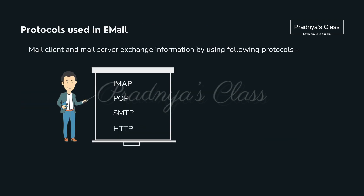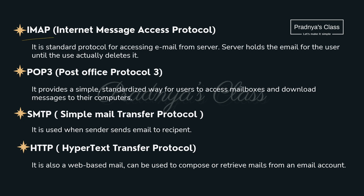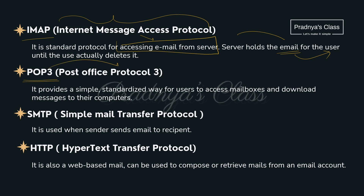Now let's discuss some protocols used while sending email. The first one is IMAP — Internet Message Access Protocol — used for accessing email from the server; it holds the email for the user. The second one is POP3 — Post Office Protocol 3. Keep in mind the full forms. It allows users to access mailboxes and download messages.